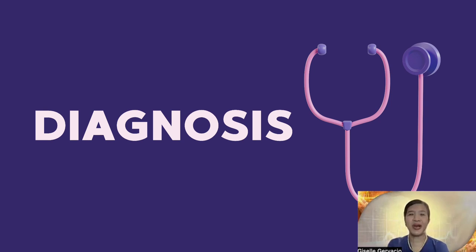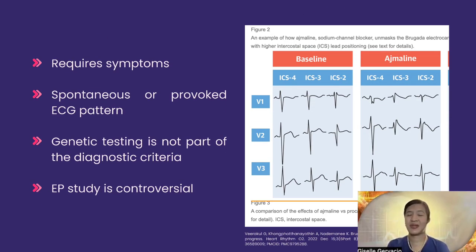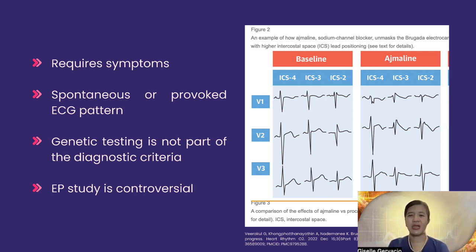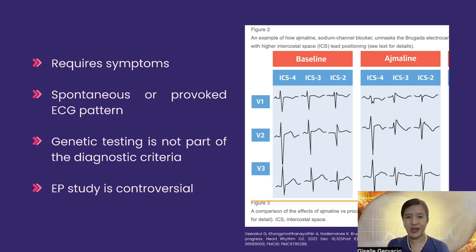The diagnosis of Brugada syndrome requires the presence of the phenotype — either resuscitated sudden death, ventricular fibrillation, syncope, presyncope, or seizure — along with a spontaneous or provoked ECG pattern showing a J-point, ST elevation, and T-wave inversion. Provocation is performed using a sodium channel blocker such as ajmaline, flecainide, or procainamide. With that provocation, a normal baseline may be converted into a type 1 pattern, which is necessary to allow diagnosis of Brugada syndrome.